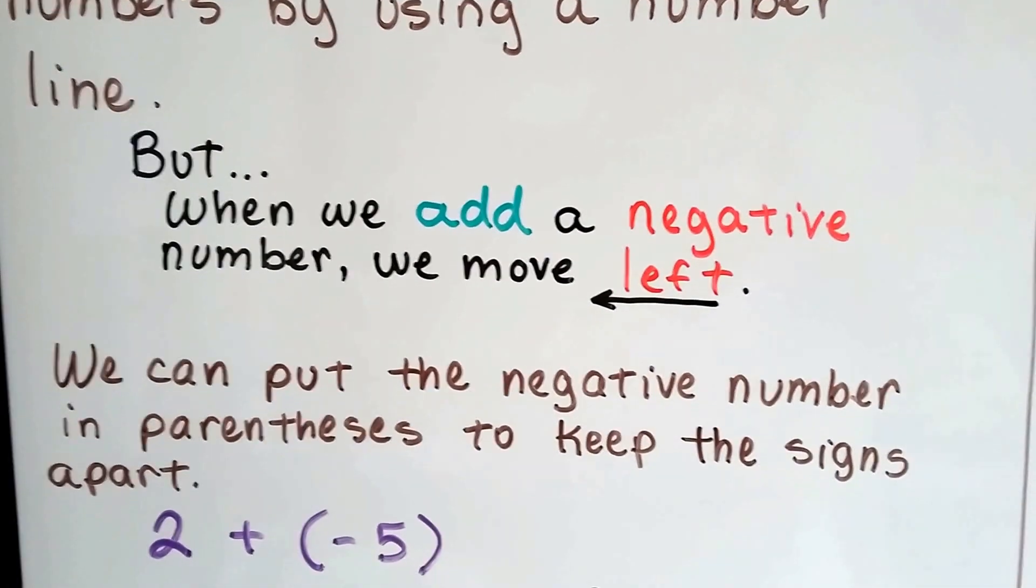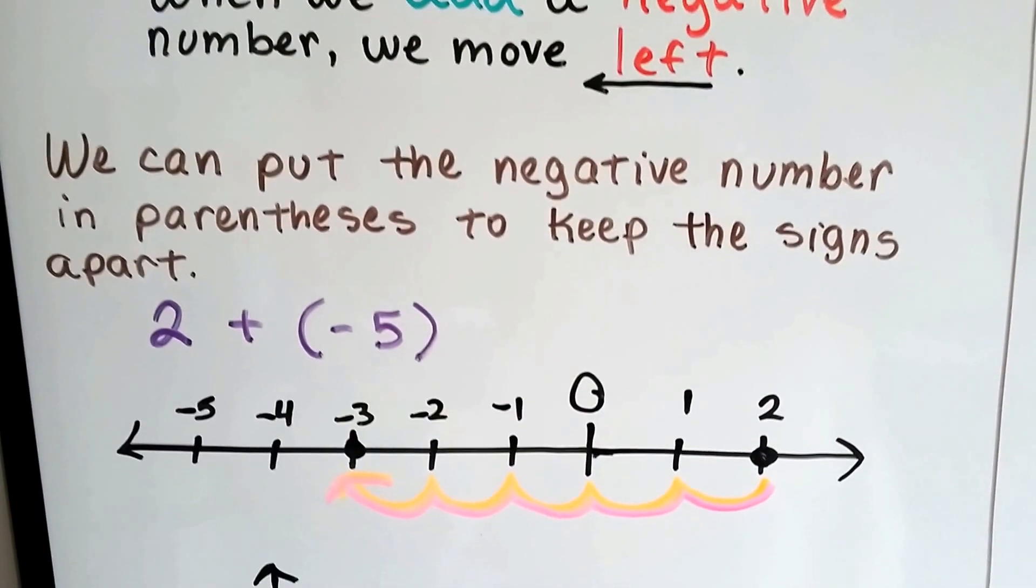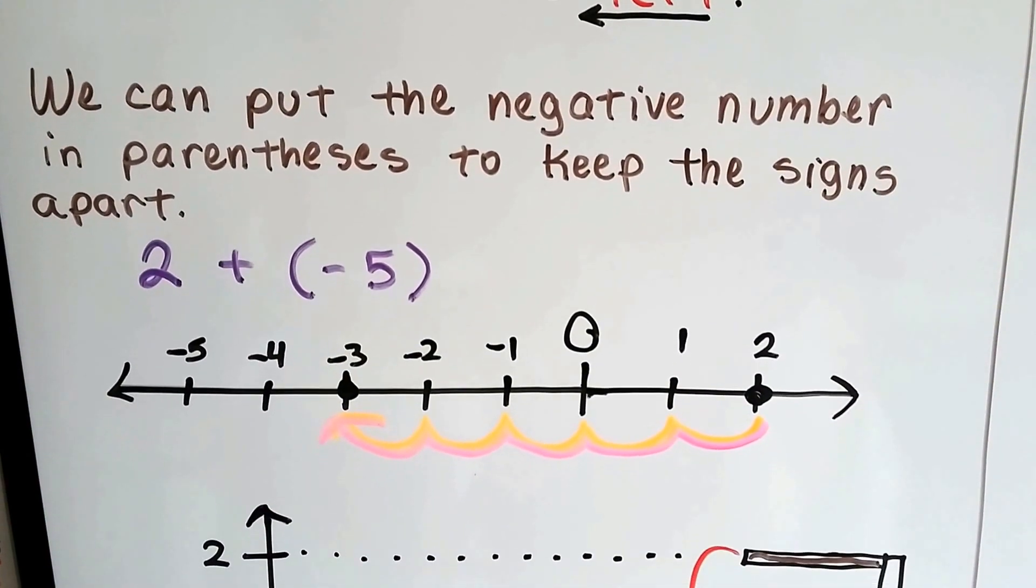But when we add a negative number, we move left. We can put the negative number in parentheses to keep the signs apart.